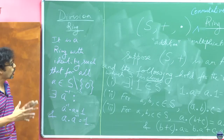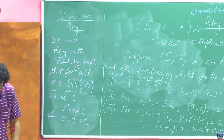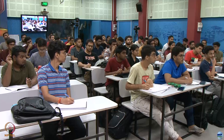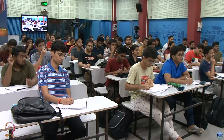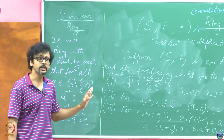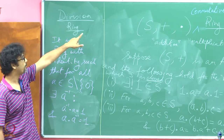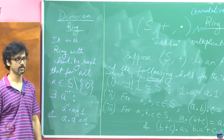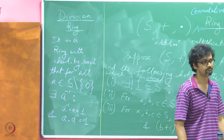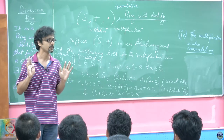Every non-zero element having a multiplicative inverse in a ring with identity — such a ring is called a division ring. Not all division rings are commutative. Quaternions — a classic example of a division ring — every non-zero quaternion has an inverse, but quaternion multiplication is not commutative. So you can have a division ring where multiplication does not commute.